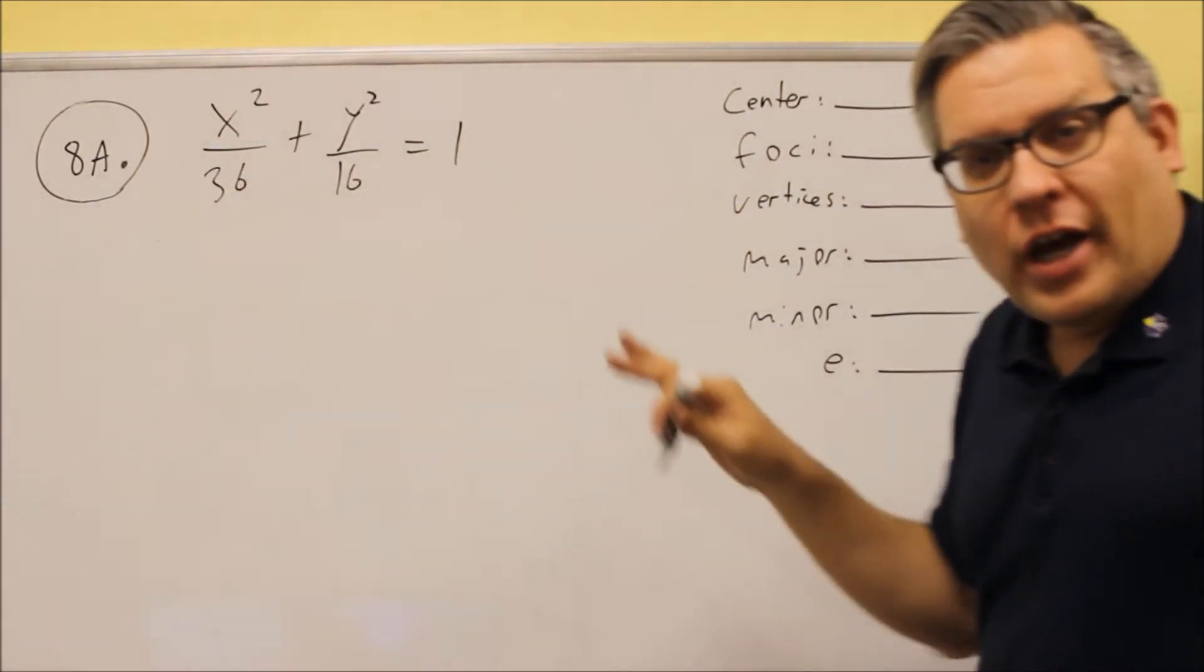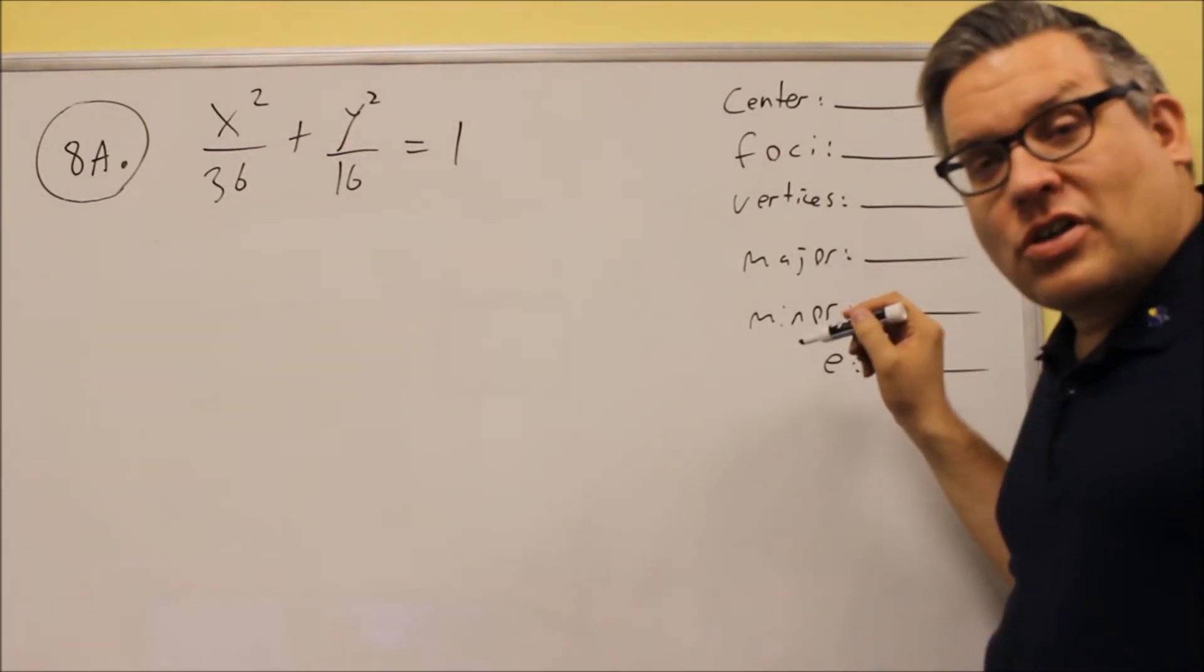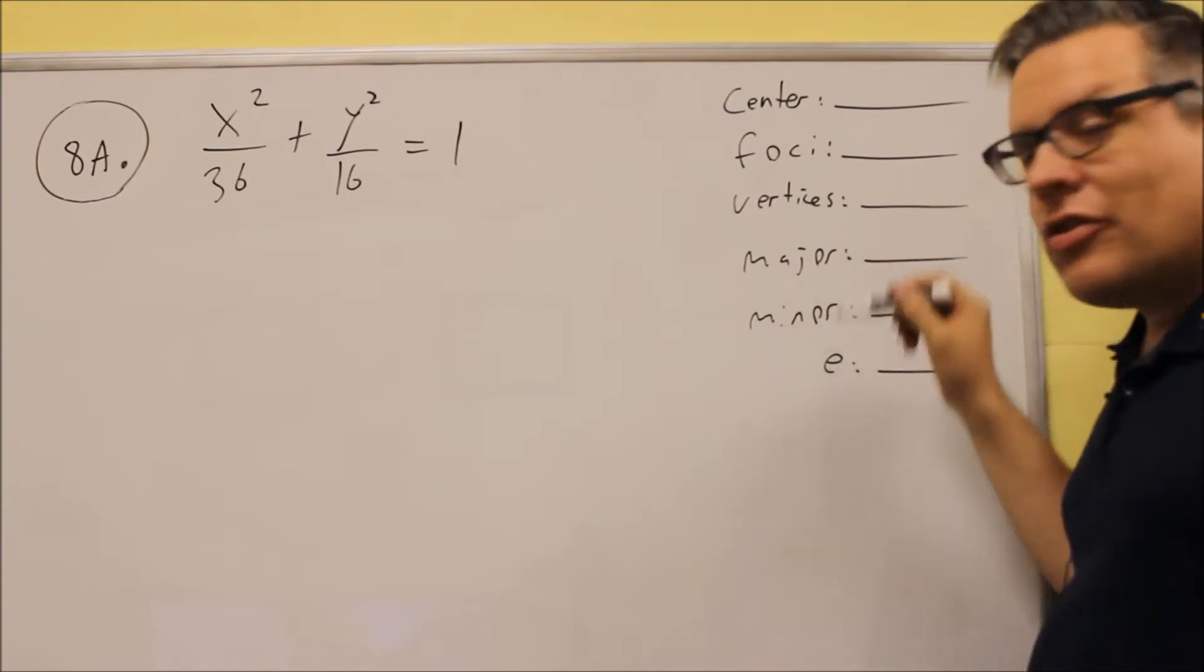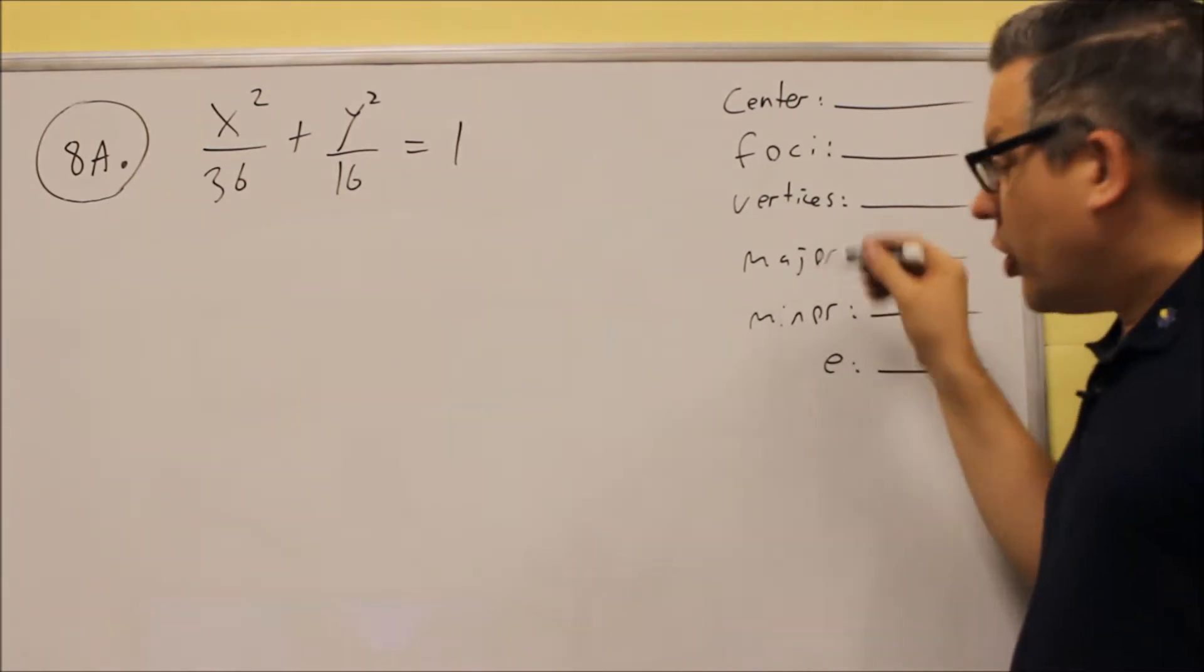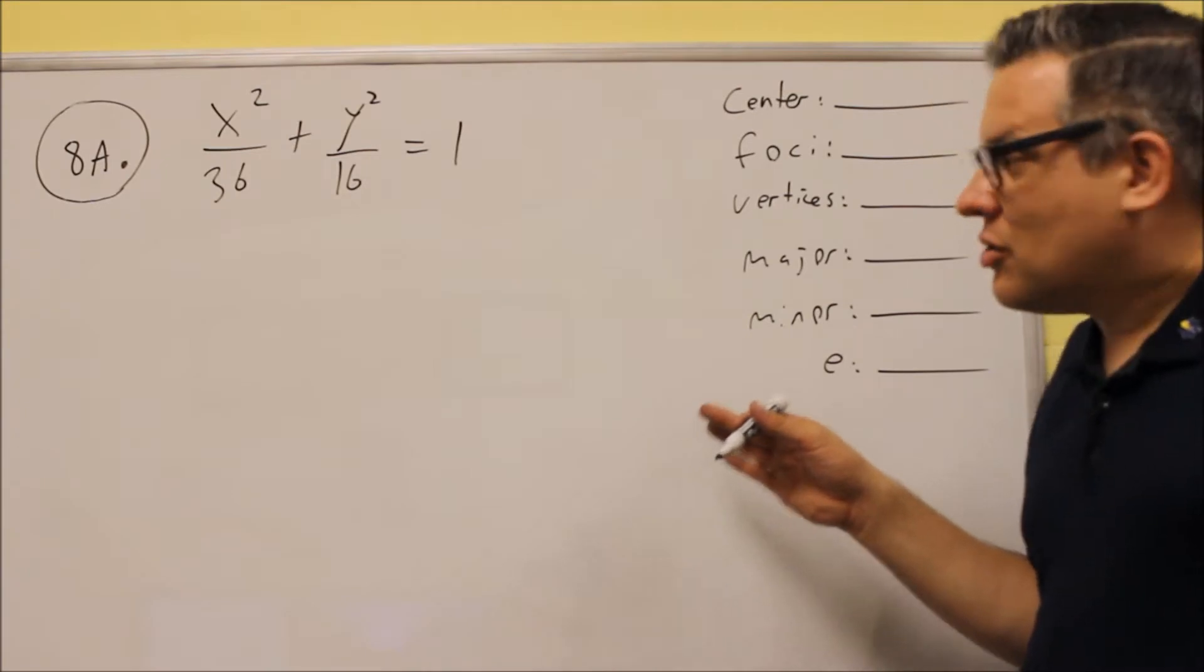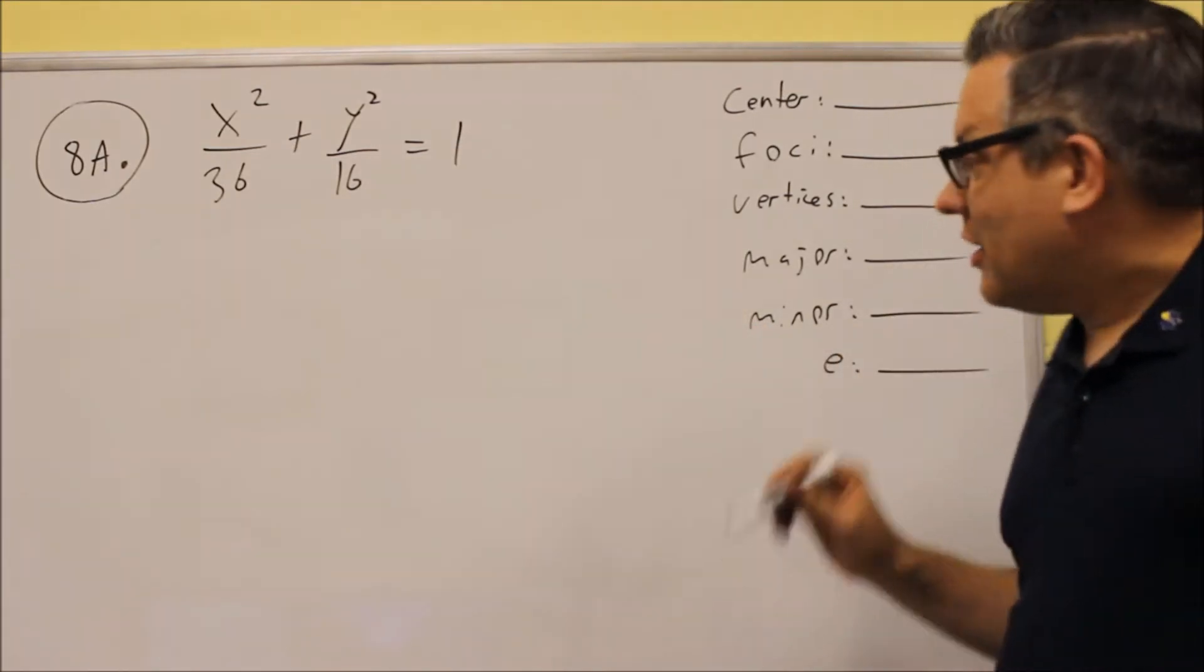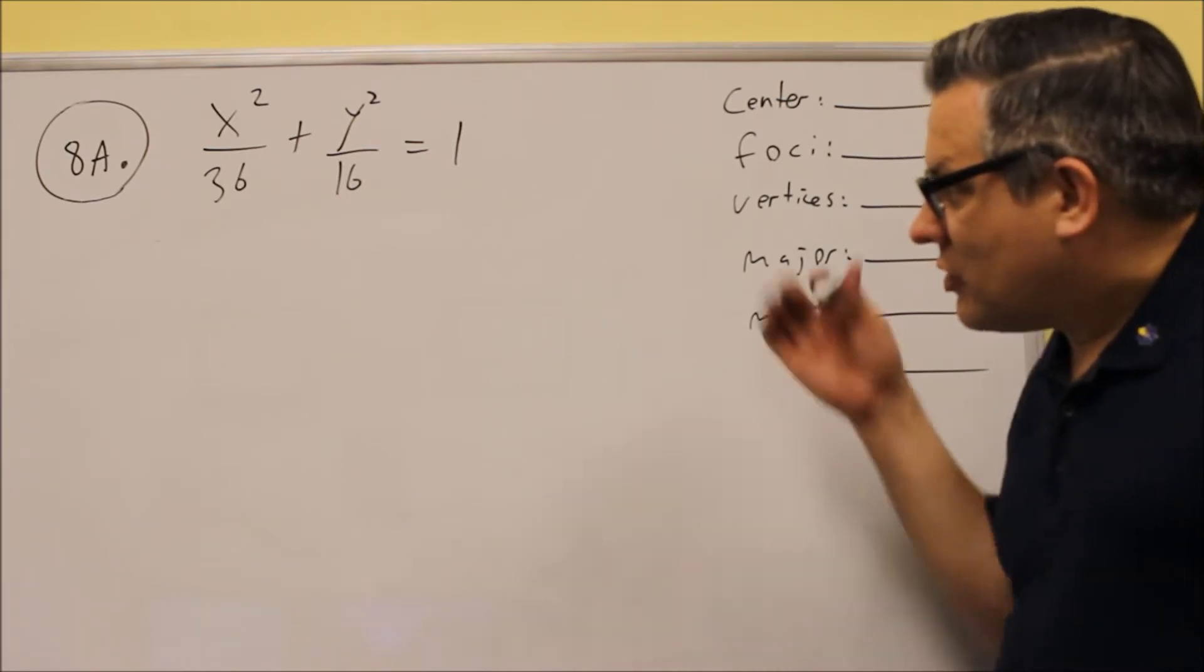But let's suppose we didn't even know that. How can we tell if it's an ellipse or not? You can tell by what they're asking in the blanks here. If they ask for length of major, length of minor, that's only for ellipses. So that's going to be a hint right away of what kind of graph it is. If you're not sure about it from the equation, just look at what they're asking, and that'll be another hint to tell you what kind of graph this is going to be. So this is an ellipse.